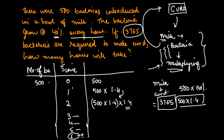At the end of hour one, we have 500 × 1.4 to the power 1. At the end of hour two, we have 500 × 1.4 to the power 2. So you need to find out what will be the power n at which the value equals 3,765.